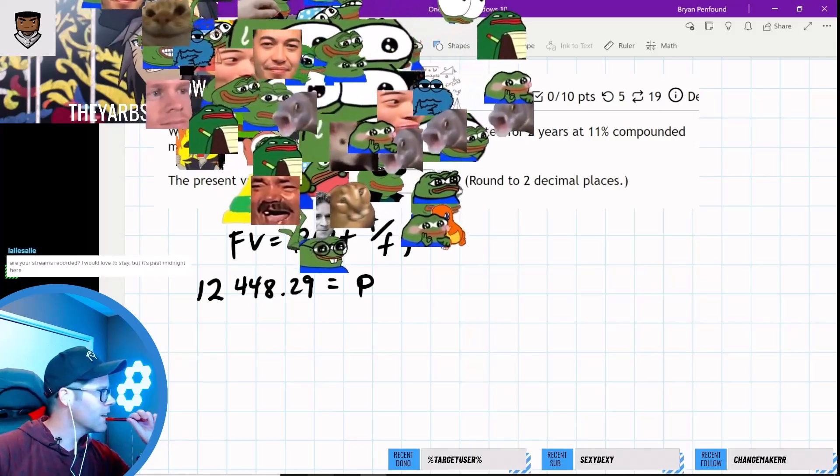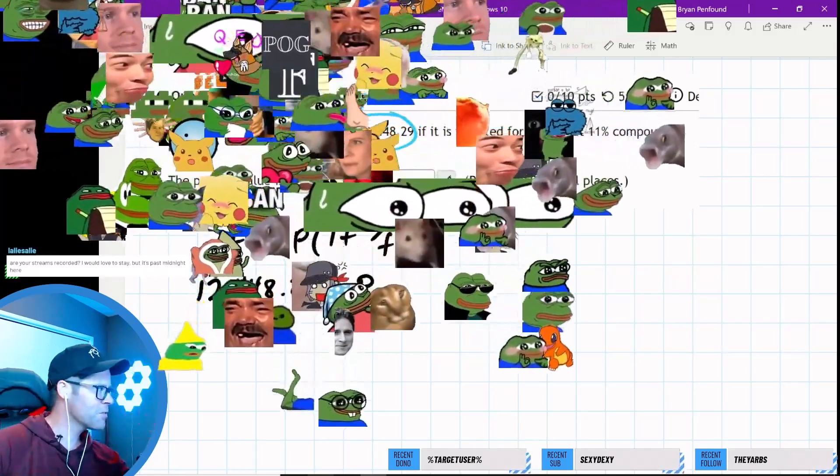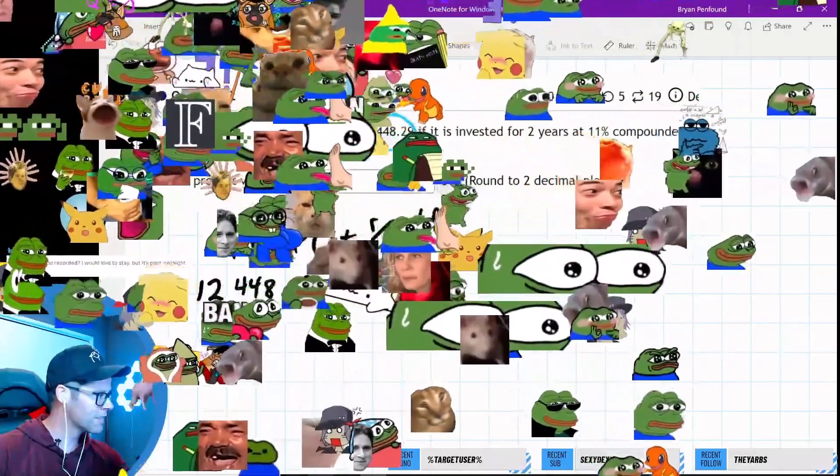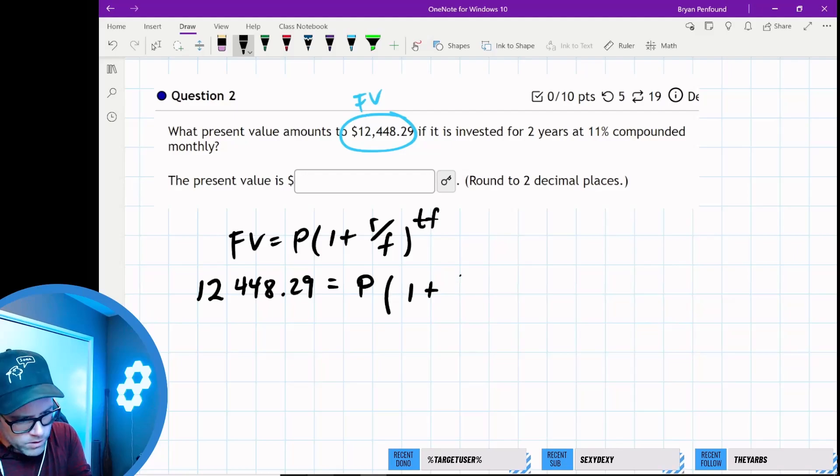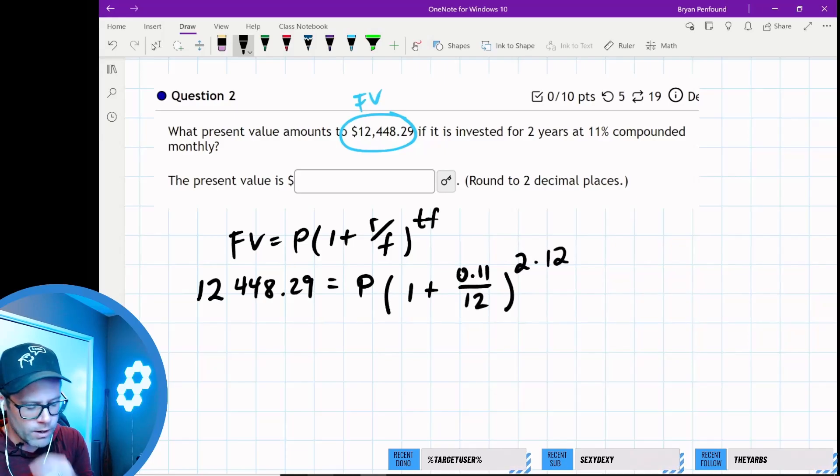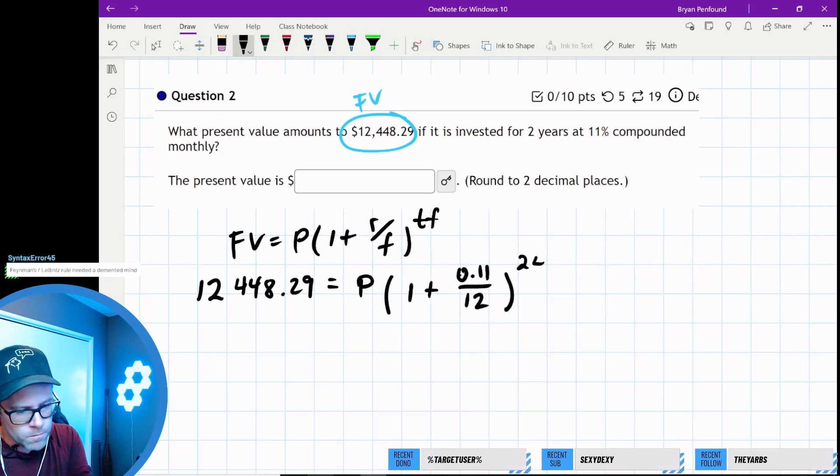Thanks so much for the follow, much appreciated. We have 1 plus the rate—11% compounded monthly—so my frequency number is 12, and we're putting this in for 2 years, so 2 times 12, which is 24.